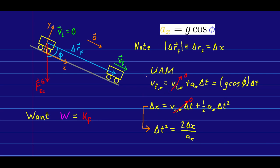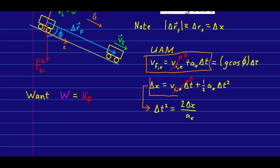This is uniformly accelerated motion. Using UAM equation one, with initial velocity zero and a_x = g cos phi, we can write the final x component of velocity. Using UAM equation two and again setting initial velocity to zero, I can solve for delta t squared and get an expression that will be handy in a moment.